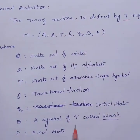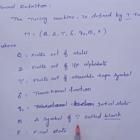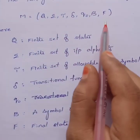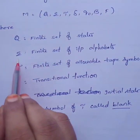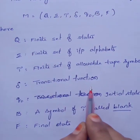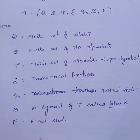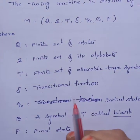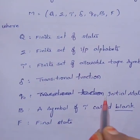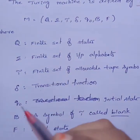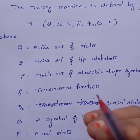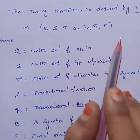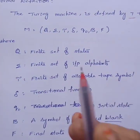B is a symbol of Γ called Blank. Q is the finite set of states, Σ is the finite set of input symbols, δ is the transition function, Q₀ is the initial state, and F is the final state. A Turing Machine accepts a string when it halts. In a recursive language, a Turing Machine will halt whether the string is accepted or rejected — in both cases it halts. But in a recursively enumerable language, the Turing Machine halts only when the string is accepted.